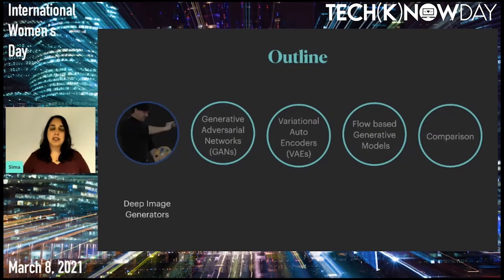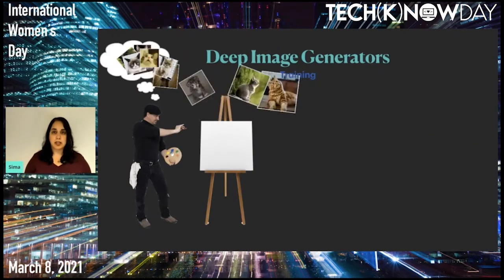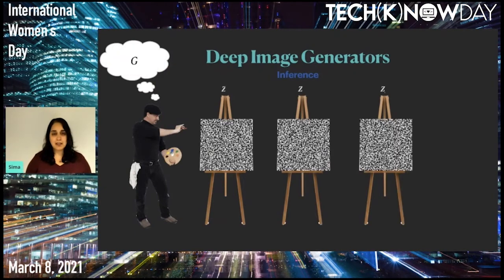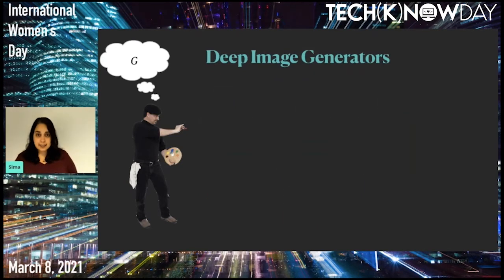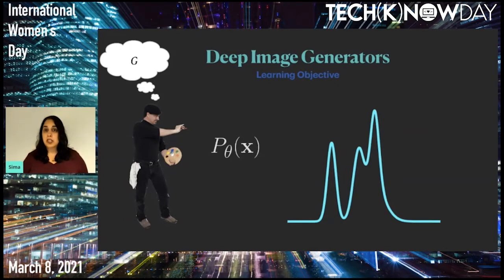Deep image generators can be seen as artists. During training, they use many images to learn a model, let's call it G. In inference, they start with random canvases and use G to generate images that look like the ones they have seen in training. Ideally, we would like it to learn the probability P to generate an image X from the distribution of our training images. This way we can just sample P and generate realistic images.